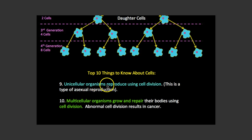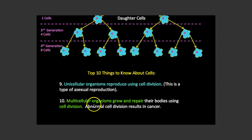In unicellular organisms, cell division is used to reproduce — this is a type of asexual reproduction. In multicellular organisms, cell division is used for growth and repair. Our cells don't get bigger; as we get bigger, we get more cells. When we break a bone, it heals by making new cells to replace the ones that were damaged. And when there's abnormal cell division — when something goes wrong — that is essentially cancer.